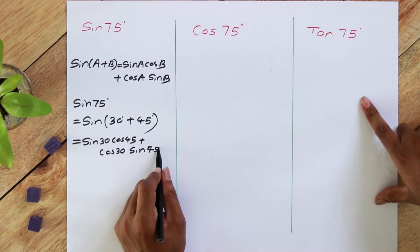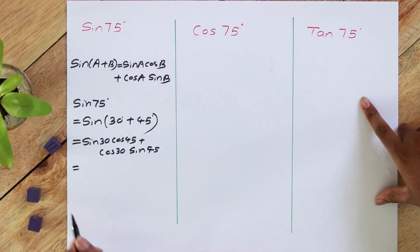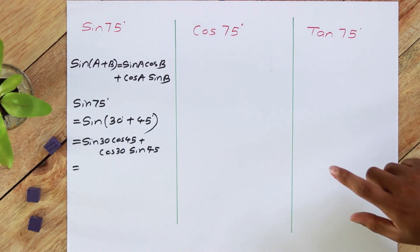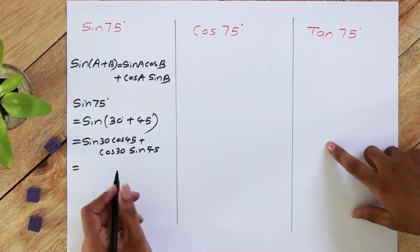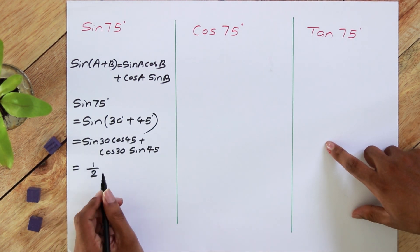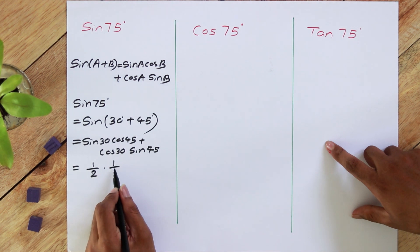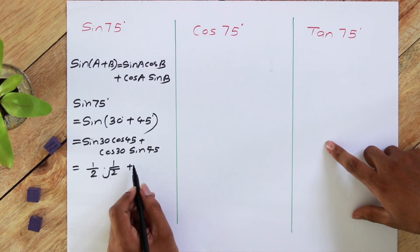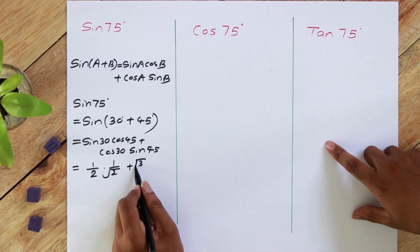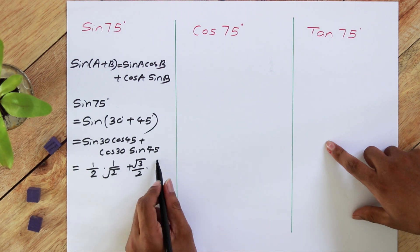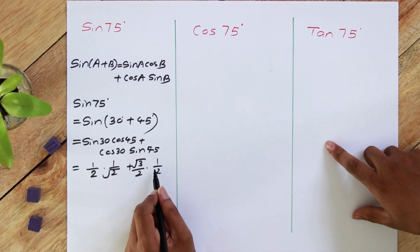Now if you watch my basic geometric values video, you know sin 30 is 1/2, cos 45 is 1 over root 2, cos 30 is root 3 over 2, and sin 45 is 1 over root 2.